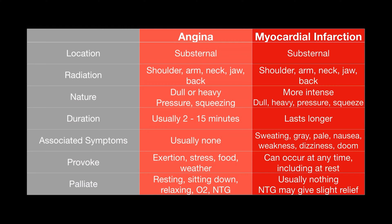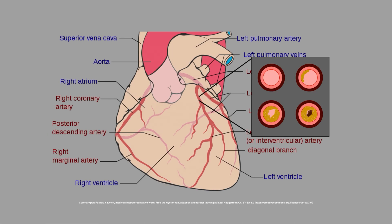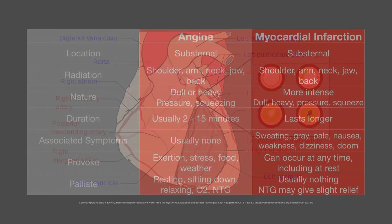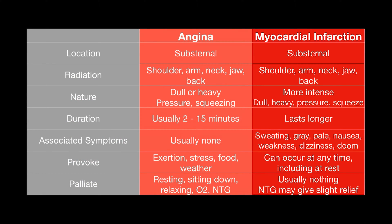When complete blockage occurs, part of the heart muscle will die. Before we get to a true myocardial infarction, there are usually some warning signs — angina is that warning sign. With angina we're probably in the phase where the artery is mostly blocked but not completely blocked yet. With angina there will be some chest pain, usually in the center of the chest — substernal — the same location as a myocardial infarction, though the MI pain is usually much more intense and severe.